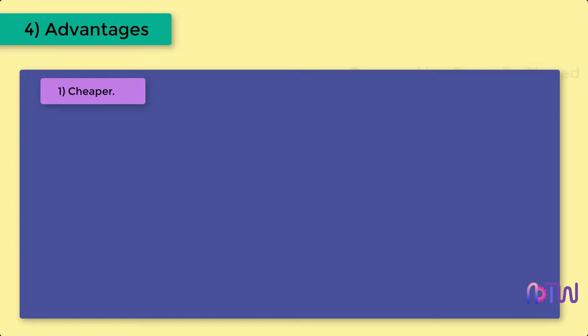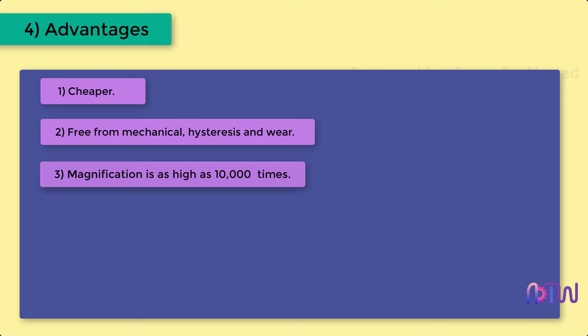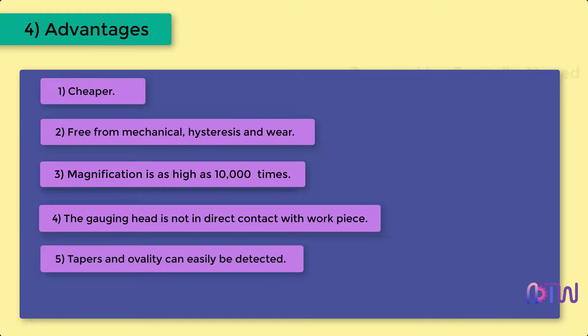Advantages: It is cheaper, simple to operate, and the cost is low. It is free from mechanical hysteresis and wear. The magnification can be obtained as high as 10,000 times. The gauging member is not in direct contact with the work. Tapers and ovality can be easily detected. The method is self-cleaning due to continuous flow of air through the jets and this makes the method ideal to be used on shop floor for online controls.